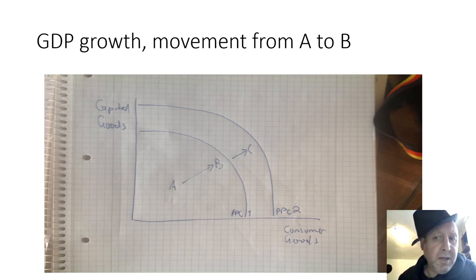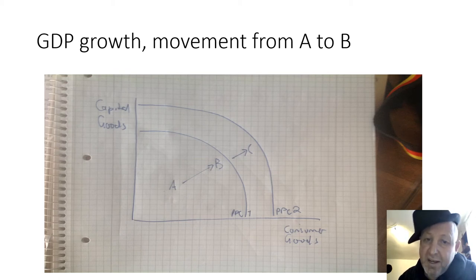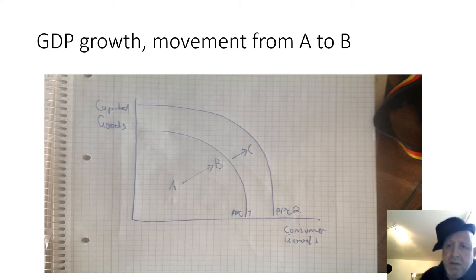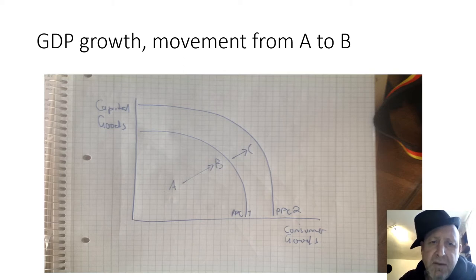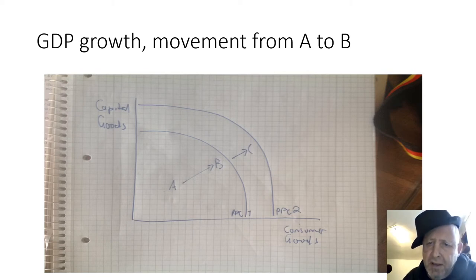That looks like a PPC — I remember PPCs from the beginning of economics. We have one labeled capital goods against consumer goods. Looking at PPC1, we have a movement from A to B, which implies economic growth. The economy was operating with a given amount of capital goods and consumer goods. As people invest more and become more efficient, we get closer to the line of PPC1, which is the line of efficiency — so we have economic growth.